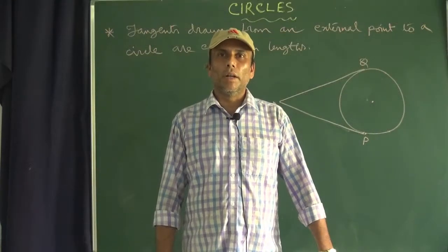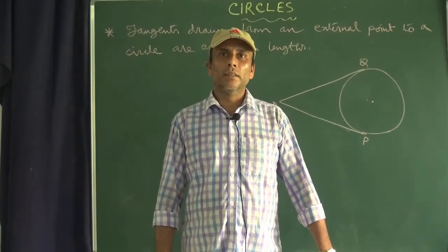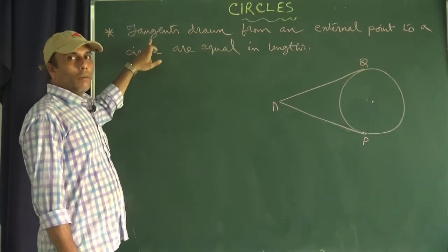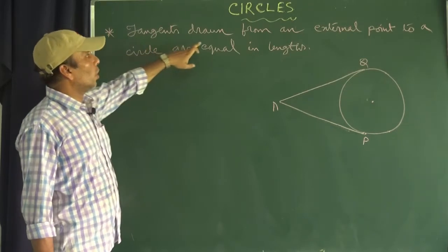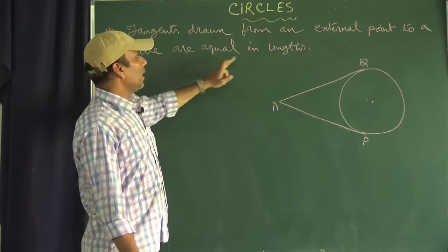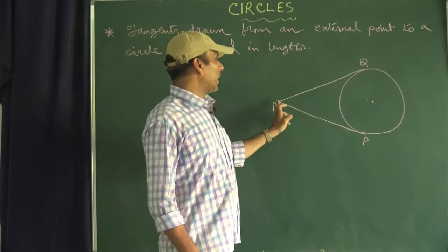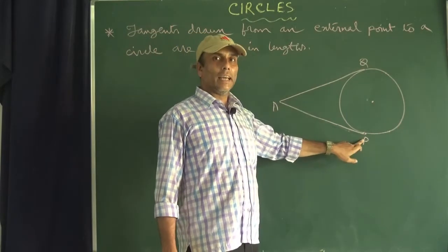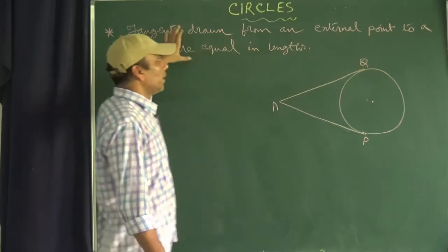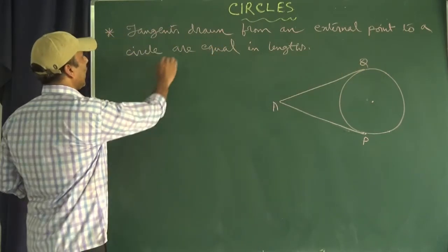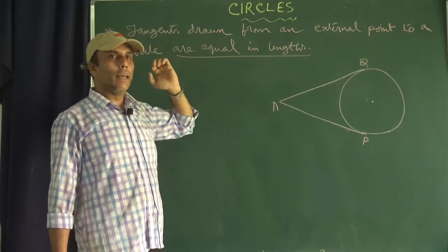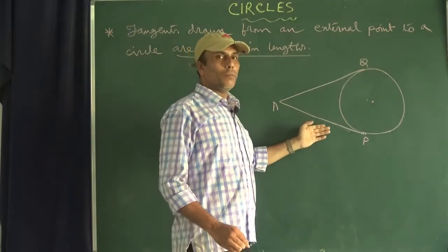Hello viewers, welcome back to our YouTube channel Don Moscow School Tinsukia. Today I am going to discuss about circles. Here is one theorem of a circle: the tangents drawn from an external point to a circle are equal in length. From an external point, two tangents AP and AQ are drawn, and as per this statement we have to prove that they are equal in length. This question often comes in metric exams.